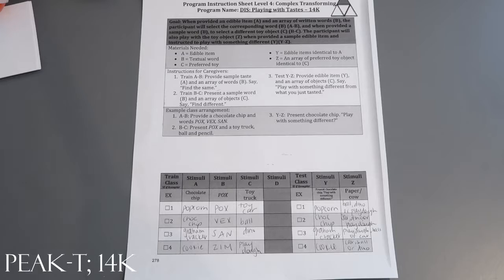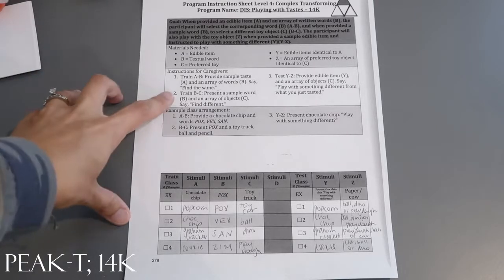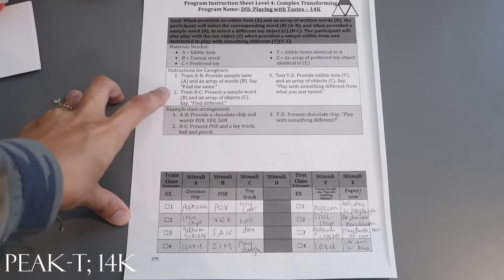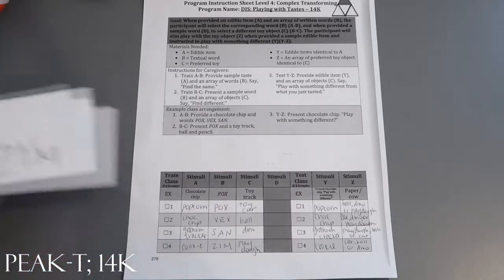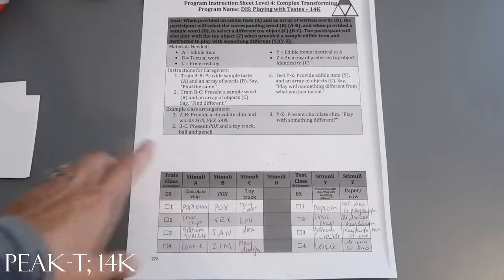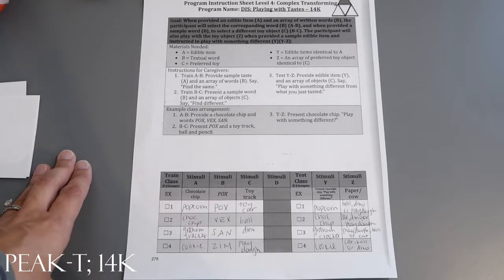For train B to C, you would present the words - those cards I just showed you - and an array of the objects, those four items I showed you, and you would say 'find different.'